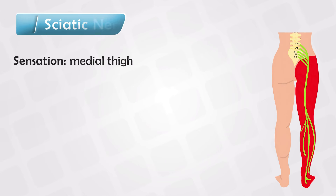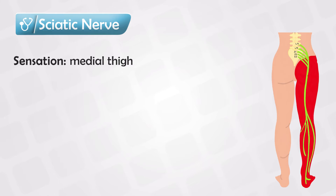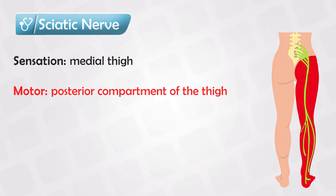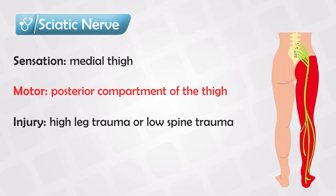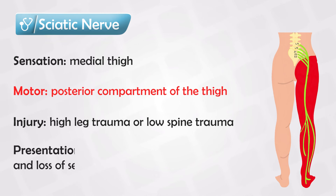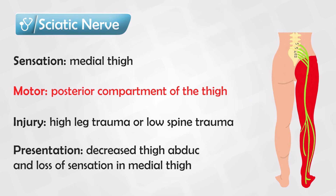The sciatic nerve is the one that splits into the common peroneal nerve and the tibial nerve, and it mainly supplies the following muscles. It can be injured by trauma high up in the legs, or in the lower spine, such as a herniated disc or posterior hip dislocation. Injury of this nerve presents as injury of both the tibial and the peroneal nerves.